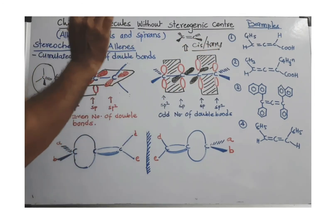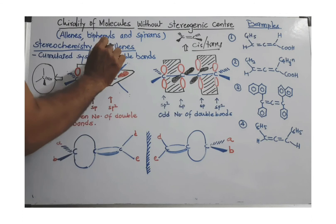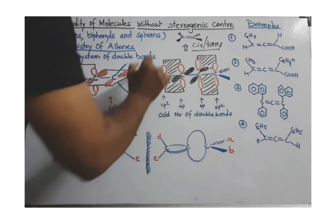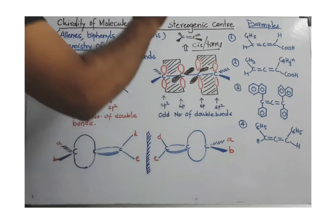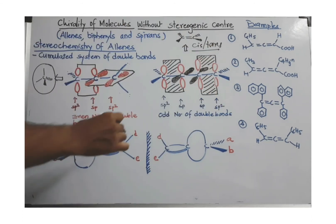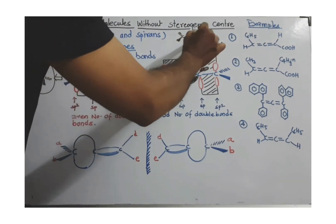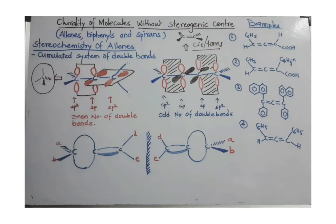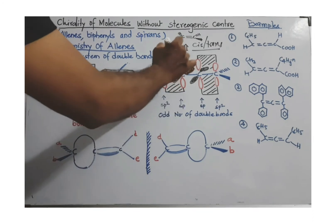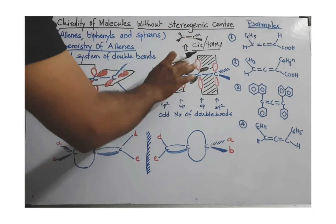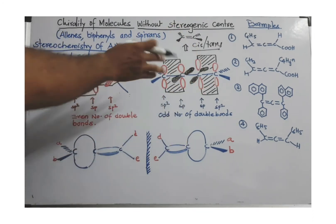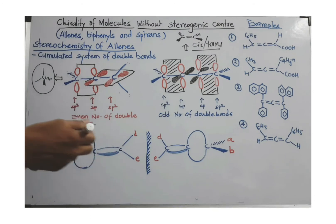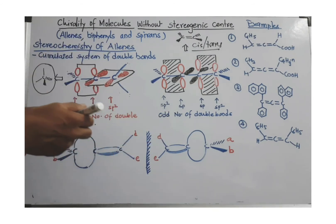So listen carefully: allene with an odd number of double bonds cannot show optical activity. It can show geometrical isomerism — cis-trans isomerism — and you can reject that molecule at once when considering whether it shows optical activity.